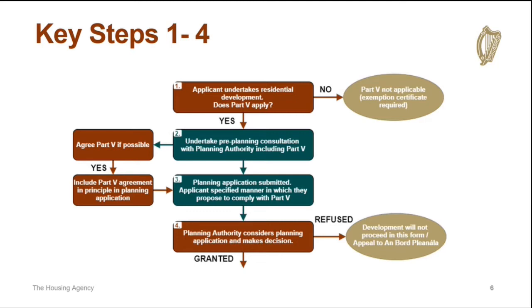Step 3 is the submission of the planning application by the applicant. The application must include details of how they propose to comply with Part 5. The planning authority then considers the application and makes a decision.